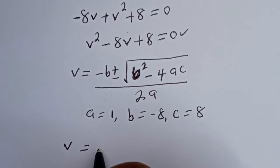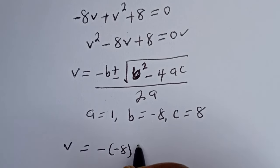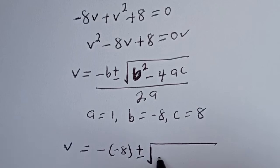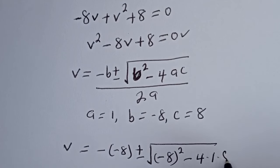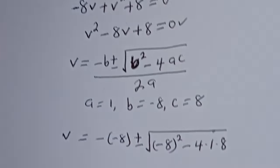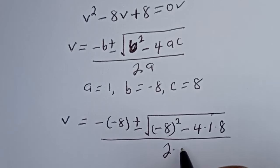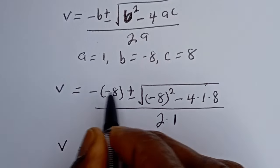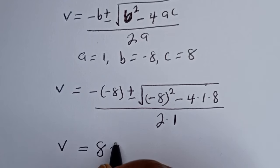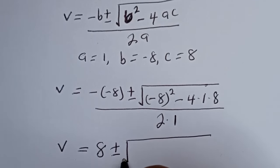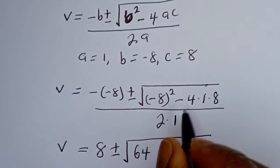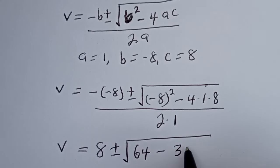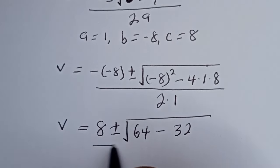Substituting into the quadratic formula: v is equal to negative bracket negative 8, plus or minus square root of negative 8 squared minus 4 multiplied by 1 multiplied by 8, all over 2 multiplied by 1. So v equals 8 plus or minus square root of 64 minus 32, divided by 2.